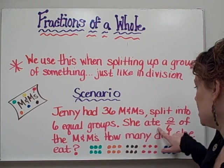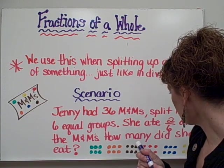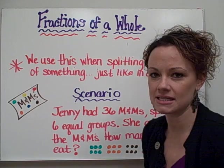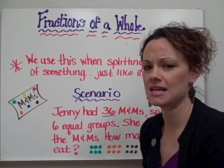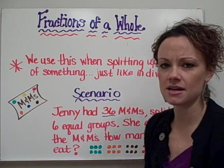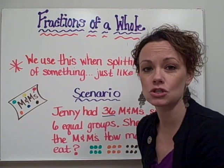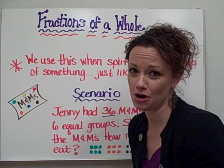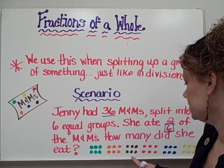Now, my problem tells me she ate two-sixths of the M&Ms. So what I want you to notice is the bottom number of our fraction normally tells us how many we have in all. However, our problem is telling us we have 36 M&Ms in our bag. So how could six be my denominator if my denominator tells me how many I have in all? Well, we're talking about six groups. Sometimes your denominator tells you how many groups you have in all. And in this case, that's exactly what it does.